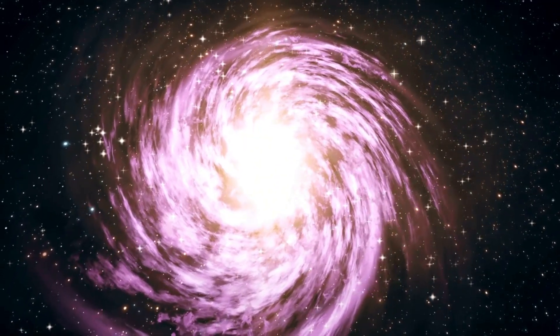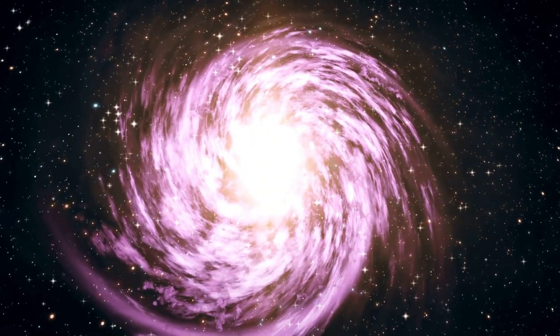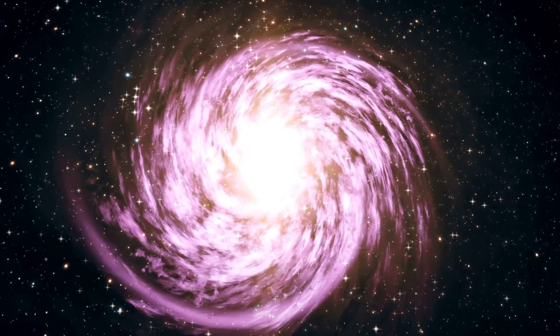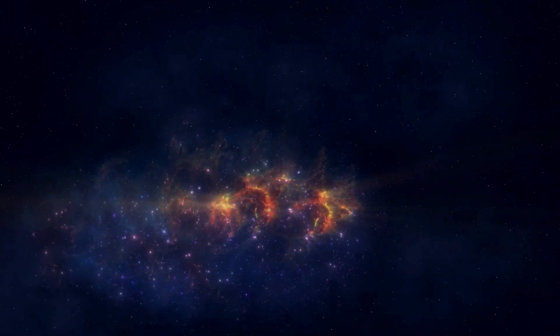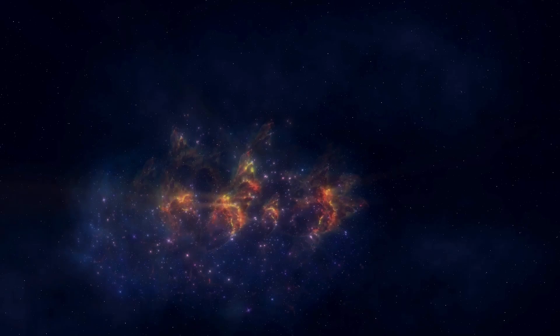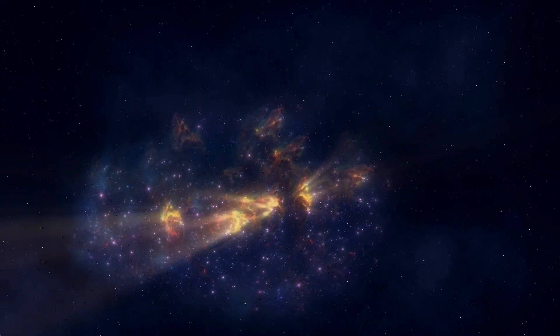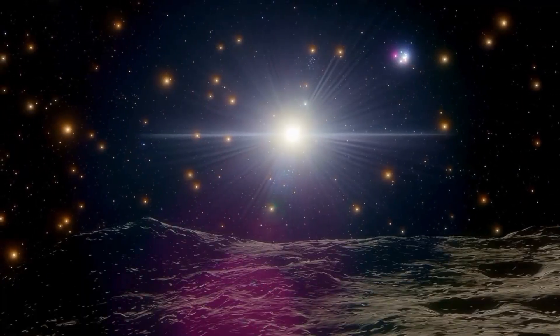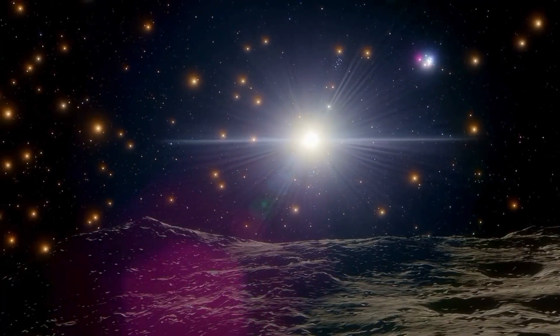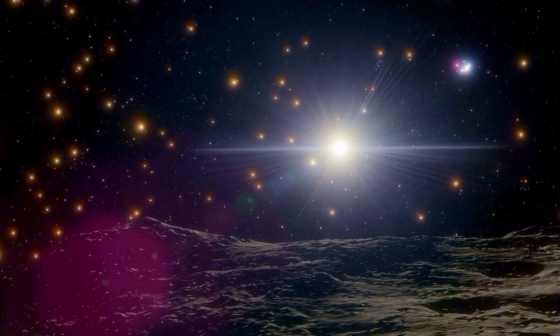Another exoplanet, initially discovered in 1988, was confirmed in 2003. As of April 1, 2024, there are 5,653 confirmed exoplanets in 4,161 planetary systems, with 896 of those systems hosting more than one planet.